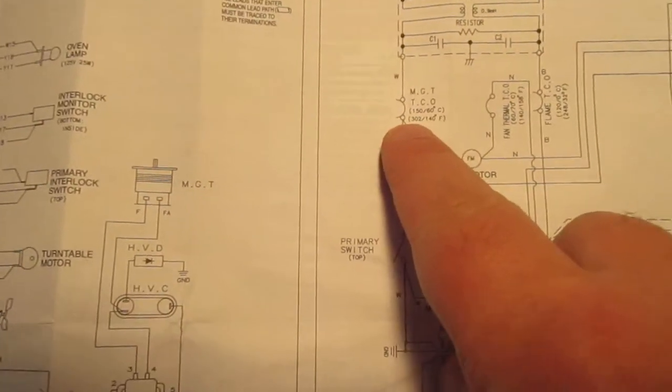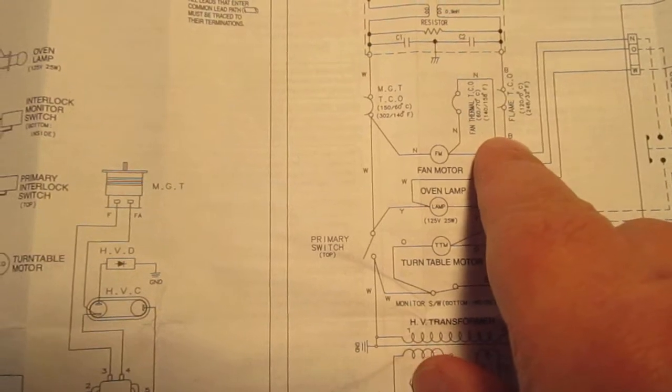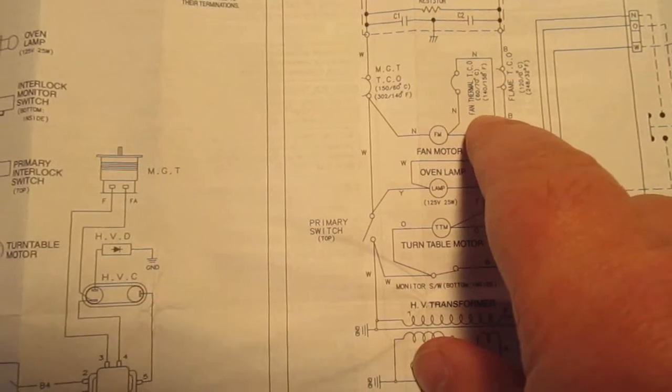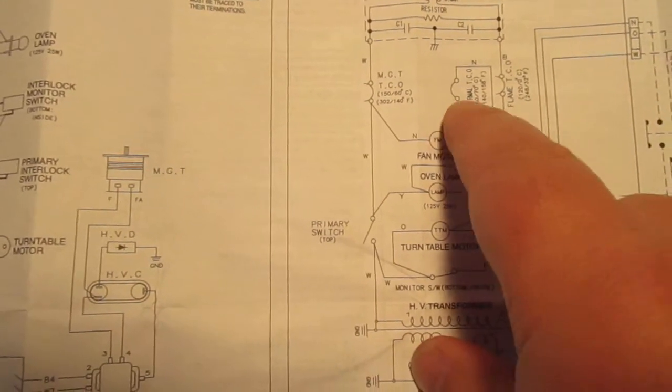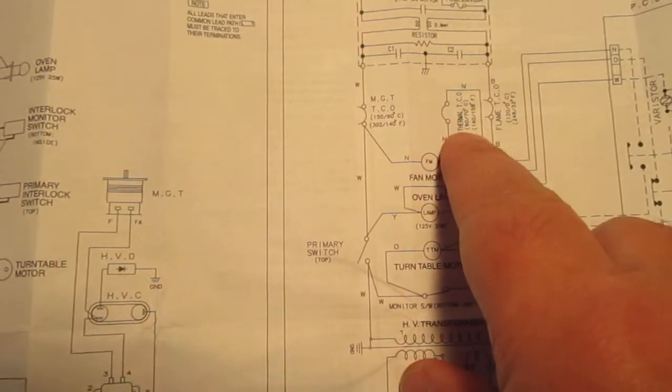Now this is for the fan thermal temperature cutoff, thermal cutoff, and it is normally open. So once it reaches that temperature it makes a circuit. We know this because this is a blue wire, this is a blue wire. I've looked inside and I found it.